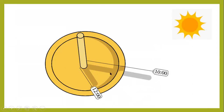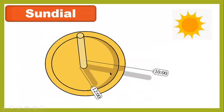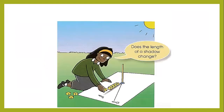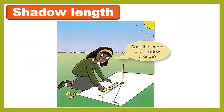We use the sundial to measure how long a shadow is. You can also use some cubes to measure shadows. The girl is using cubes to measure the shadow — this shadow can be six cubes long.